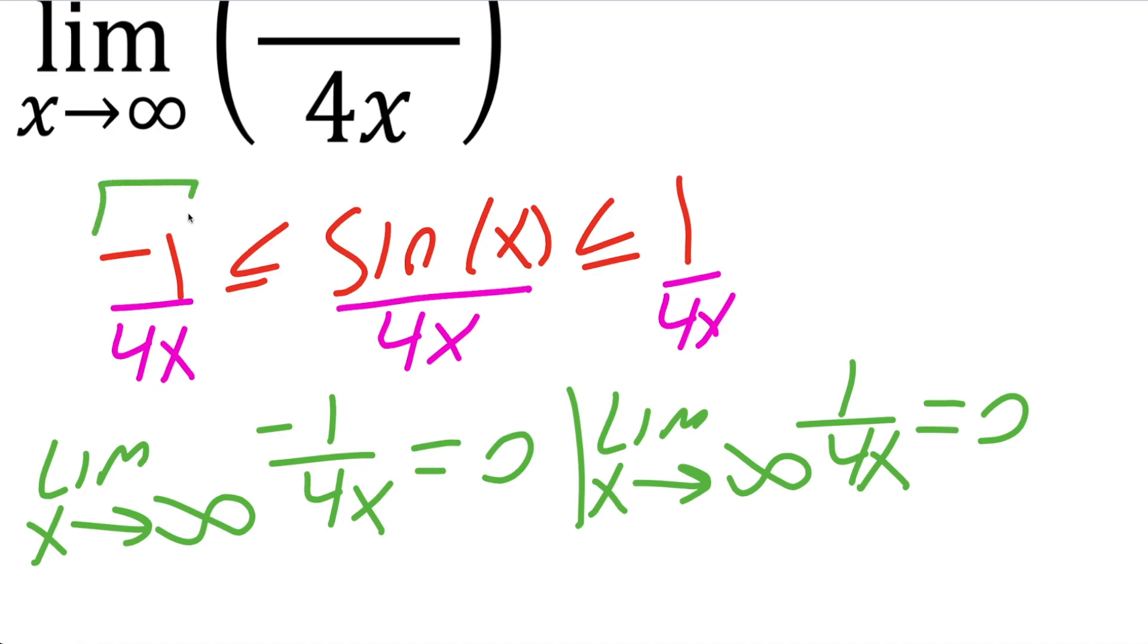So I know this piece for this limit is zero, and this piece for this limit is also zero. Sine x divided by four x is in between these two pieces. But both pieces are zero, so this piece must also be zero, applying the squeeze theorem. Our final answer for that limit is zero.